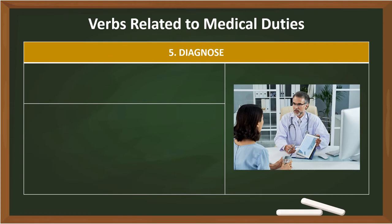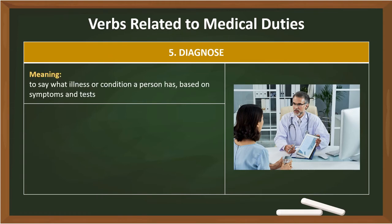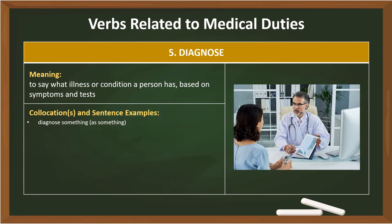5. Diagnose. Meaning: to say what illness or condition a person has, based on symptoms and tests. Collocations: Diagnose something as something — The test is used to diagnose various diseases. Dr. Miller diagnosed her condition as diabetes.